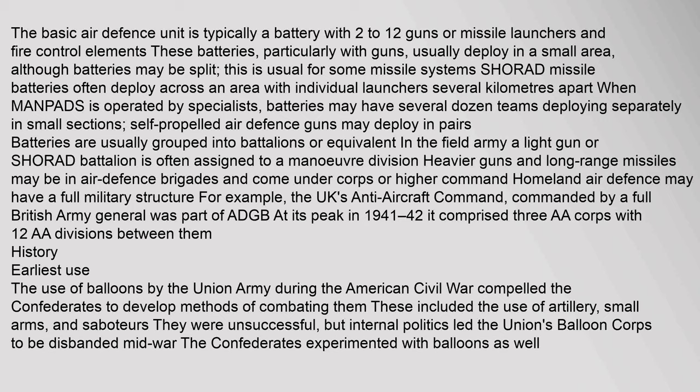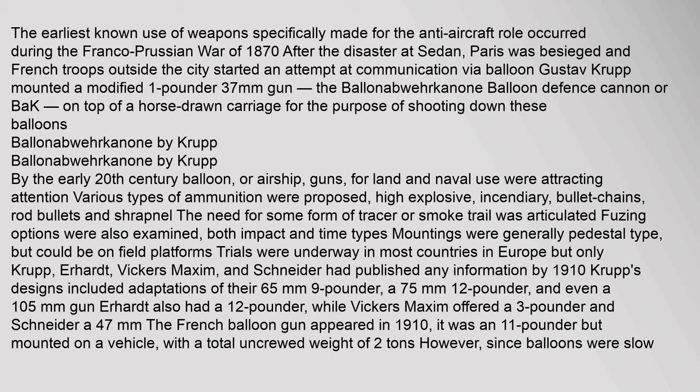The earliest known use of weapons specifically made for the anti-aircraft role occurred during the Franco-Prussian War of 1870. After the disaster at Sedan, Paris was besieged and French troops outside the city started communicating via balloon. Gustave Krupp mounted a modified 1-pounder 37mm gun — the Ballonabwehrkanone (balloon defense cannon) — on top of a horse-drawn carriage for the purpose of shooting down these balloons. The use of balloons by the Union Army during the American Civil War had also compelled Confederates to develop countermeasures, including artillery and small arms.